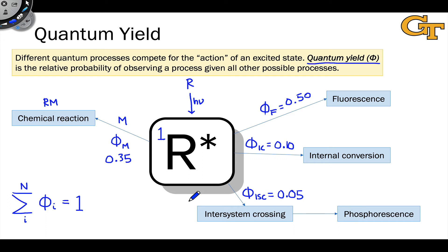So it's a probability. Essentially, given that I have formed R star, the excited state, what is the probability of fluorescence? 0.5, and so on and so forth.